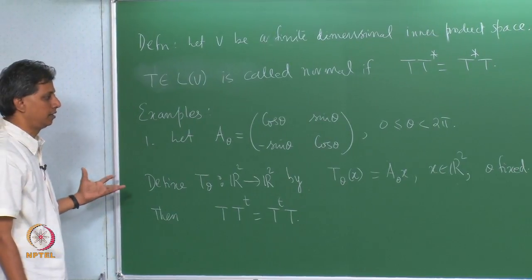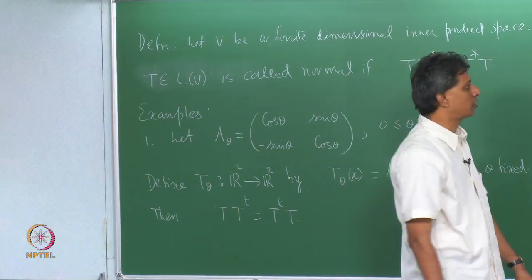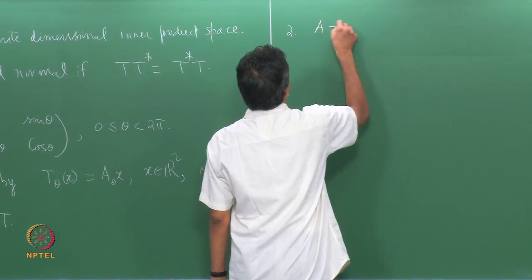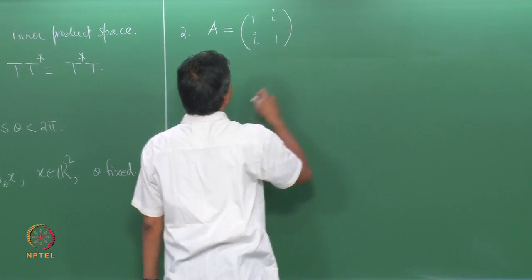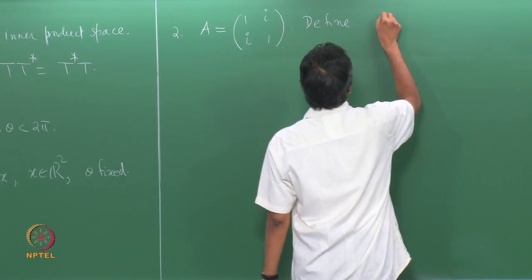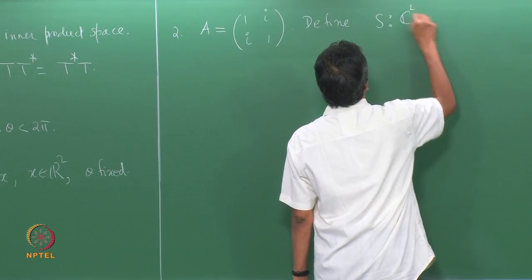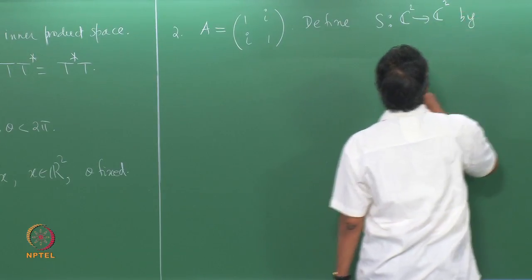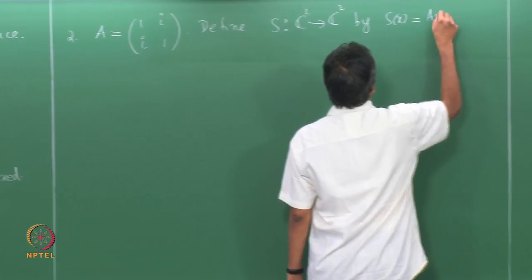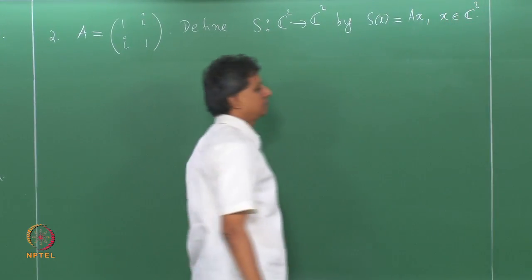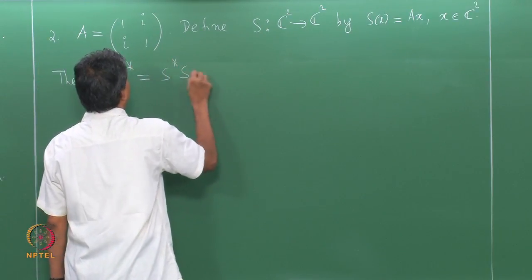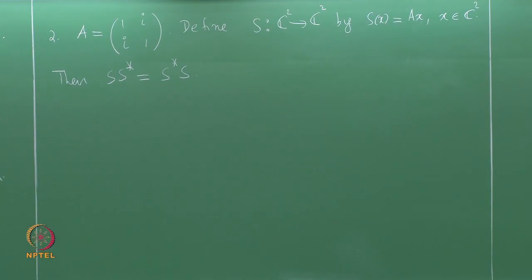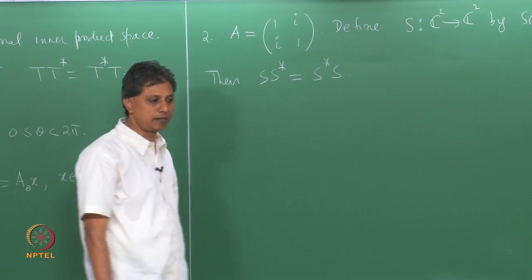Define a linear transformation T_θ from R² to R² by T_θ(x) = A_θ x for x in R², for a fixed θ. You can verify that T_θ is a normal operator. Since this is a real inner product space, instead of star we consider the transpose, so the normality condition is T T^T = T^T T. This is an example of a normal operator on a real inner product space. For example two, on a complex inner product space, take the matrix A = [[1, i], [i, 1]] and define S from C² to C² by S(x) = Ax. You can verify that S is normal, i.e., S S* = S* S. In fact this turns out to be a unitary operator.